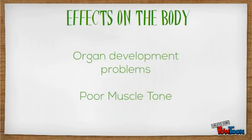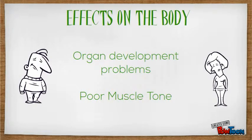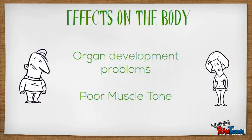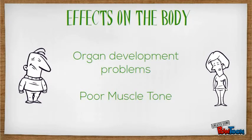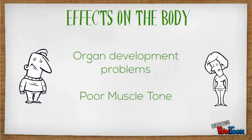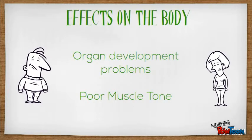Effects on the body. Poor organ development causes many health problems such as the larynx failing to grow properly, which causes the cat cry. Poor muscle tone results in the disability of doing many physical activities such as walking, talking, and even eating.